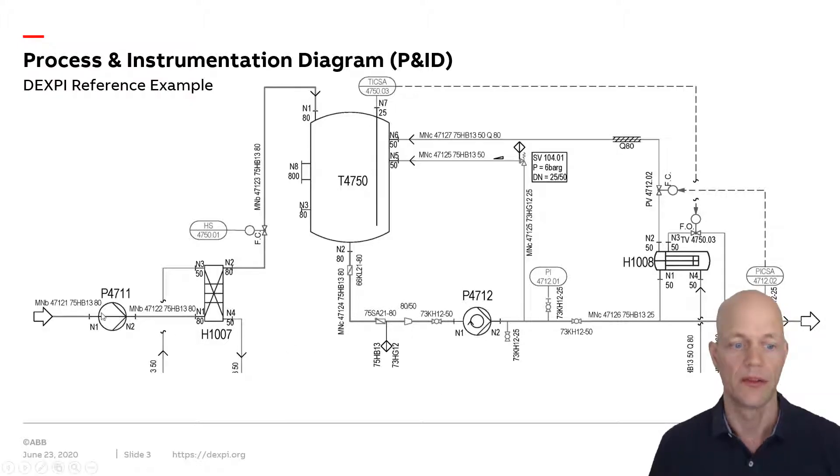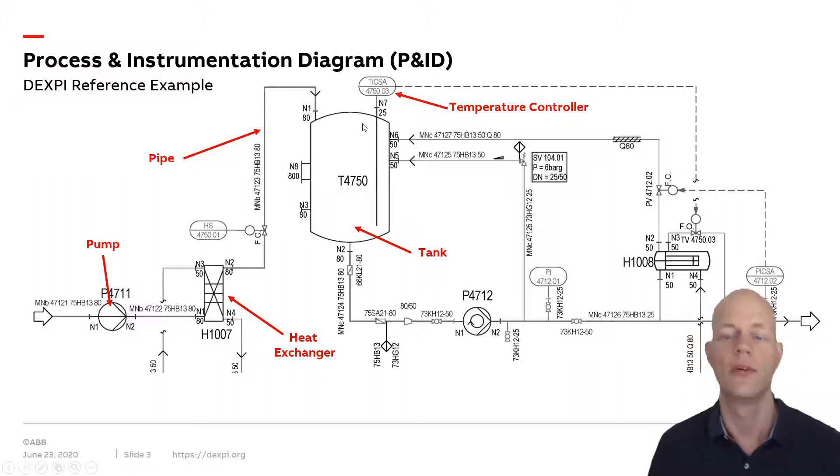For example, this shape represents a pump. This rectangular one is a heat exchanger. All the lines with arrows are pipes. This large column shape is a tank. This circle shape starting with the letter T is a temperature controller to show the temperature in the tank and be able to regulate that temperature. And this PI is a pressure indicator that measures the pressure in the pipe.